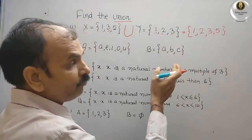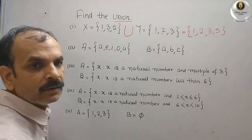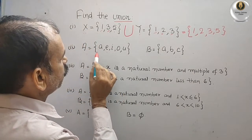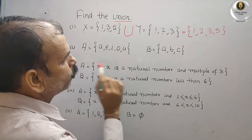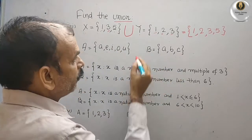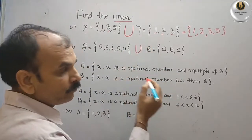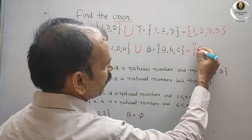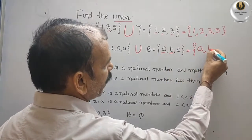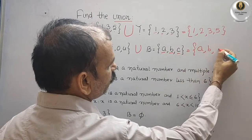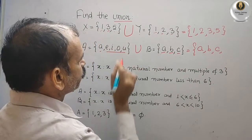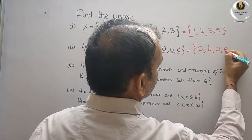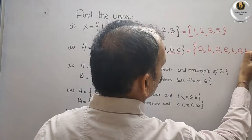Next example: A = {a, e, i, o, u} and B = {a, b, c}. What is the union? We can write it as: a is here so we write a; next is b, we write b; next is c, we write c; and then the remaining elements e, i, o, u — so the union is {a, b, c, e, i, o, u}.